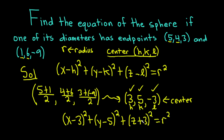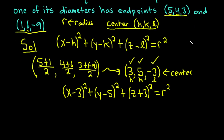We're almost done — we just have to find the radius. To find the radius, we know that both points (5, 4, 3) and (1, 6, -9) lie on the sphere, so if we plug them into the equation, it should be true. Let's take the first point (5, 4, 3) and plug it in for x, y, and z, then solve for r².